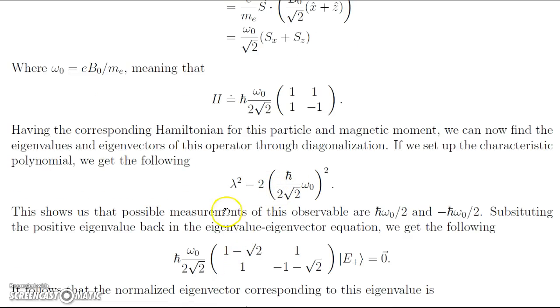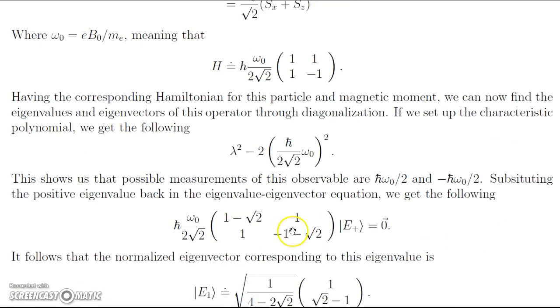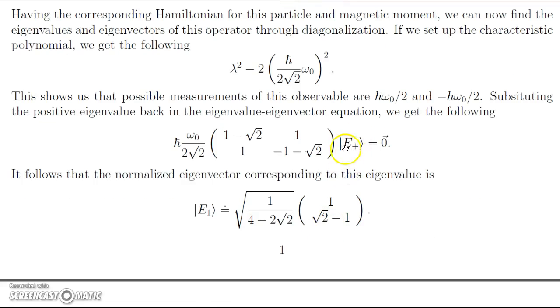We can solve this for λ to get our two eigenvalues, and this shows that the possible measurements are plus or minus ℏω_0 over 2. To find the corresponding eigenvectors with these eigenvalues, we can first substitute our positive eigenvalue back in, and we get this corresponding eigenvalue equation. We can solve this system and get our eigenvector E_+. It follows that the normalized eigenvector corresponding to this eigenvalue is E_1, which can be represented as followed.